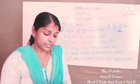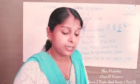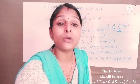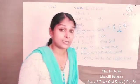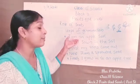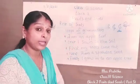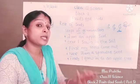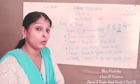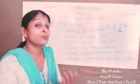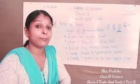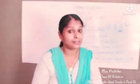The next question is: imagine that you are an apple seed — what will happen to you once you are sown in the soil? We already discussed this. The answer is: I am an apple seed. Once I am sown in the soil, my roots come out first. Then I am a sprouted seed. Finally I grow into an apple tree.